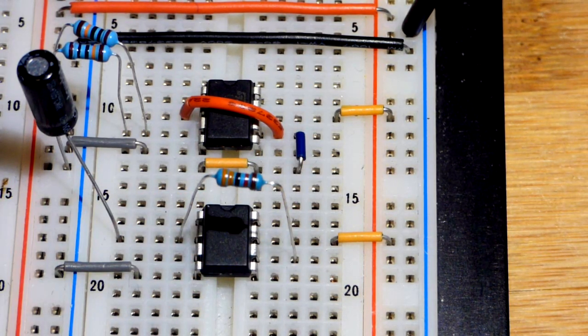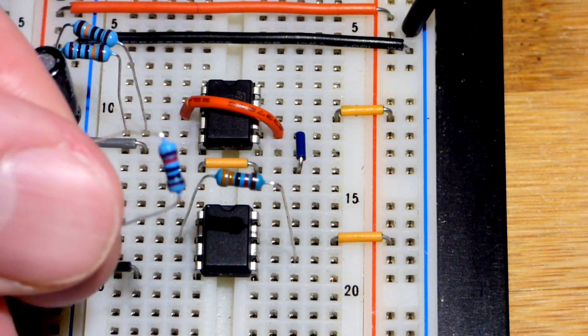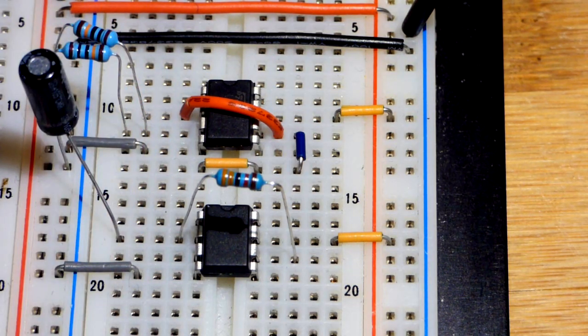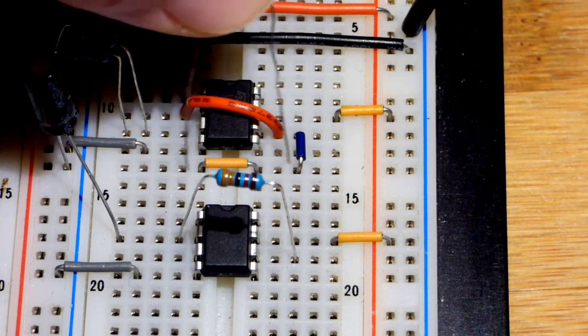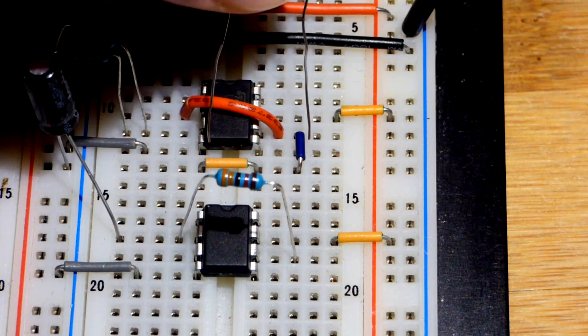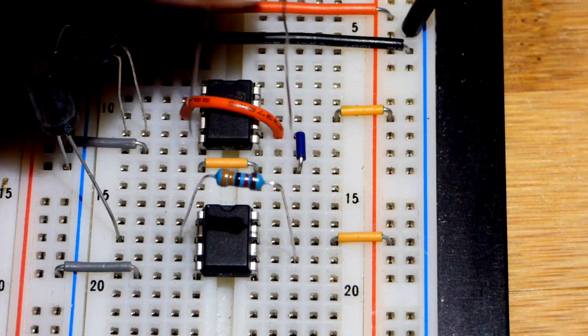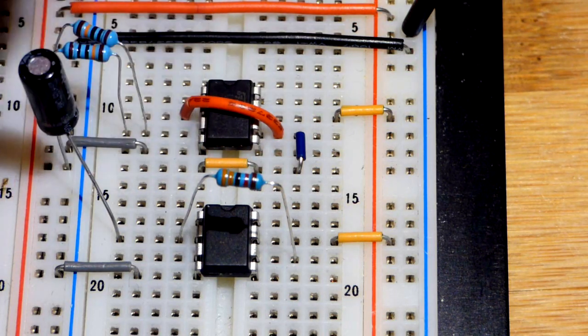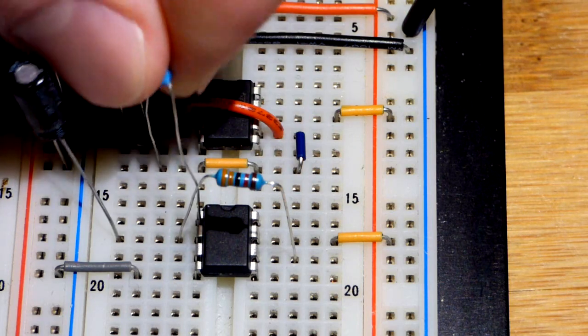We're going to use a couple of 10 kilo ohm resistors—10,000 ohm resistors. One of them is going to go to ground. I have the output of that op amp there, our zero volt reference point, and then another jumper here. The ground goes to this side too.